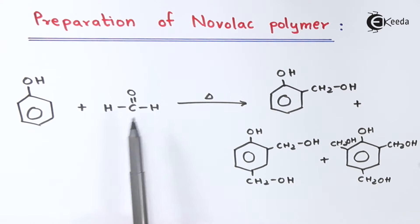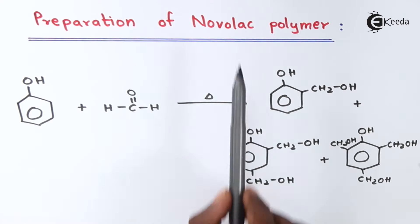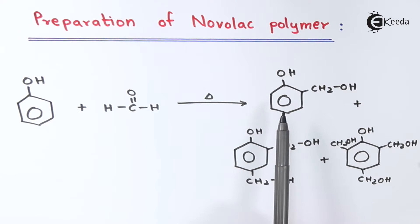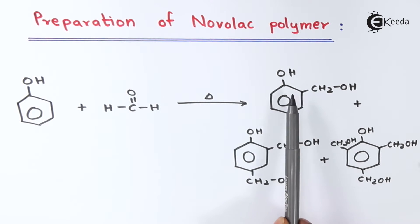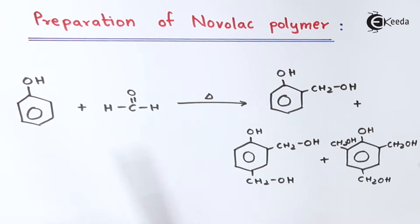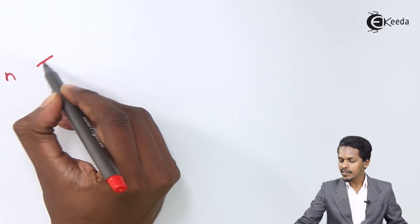To form Novolac, we need a specific monomer. The monomer we use is ortho-hydroxybenzyl alcohol. By doing the polymerization of this product, we could get Novolac. Let us now understand how that polymerization proceeds.